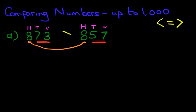Therefore, the arrow points this way. 73 is greater than 57. It's pointing to the smaller number, which is 57.